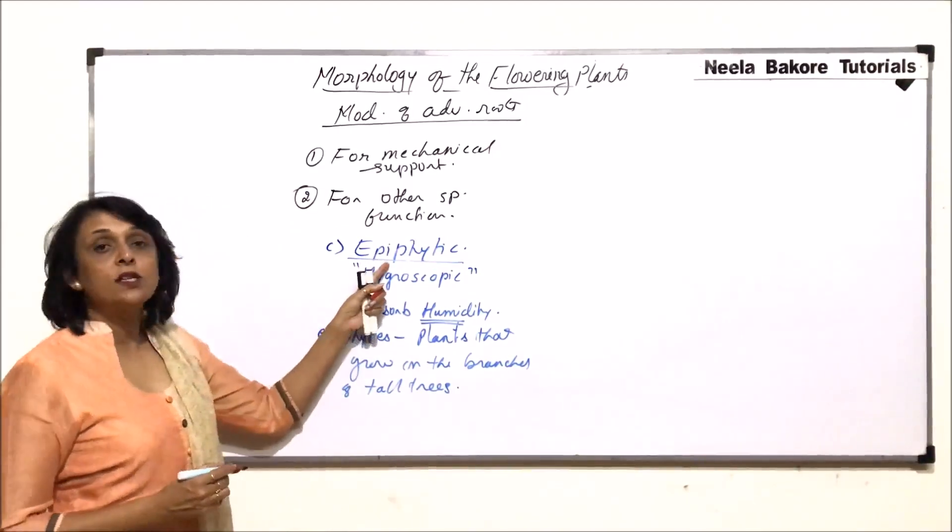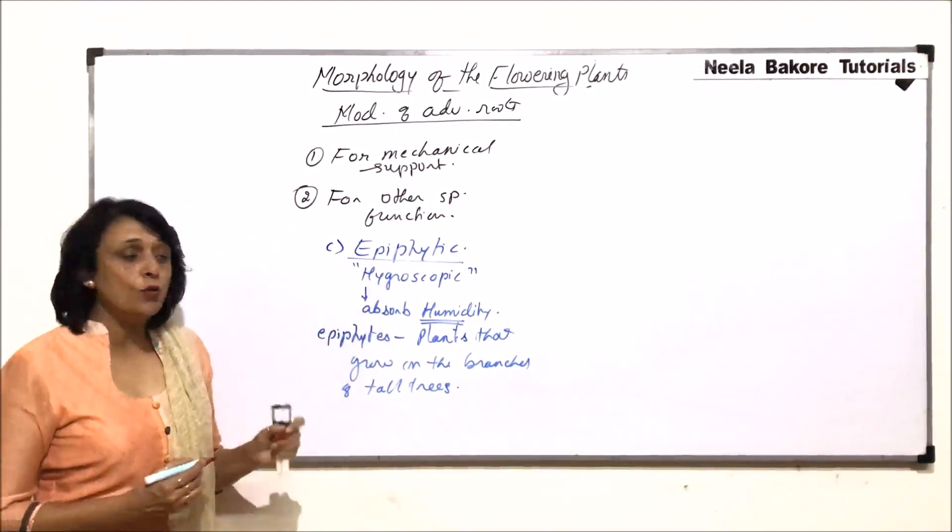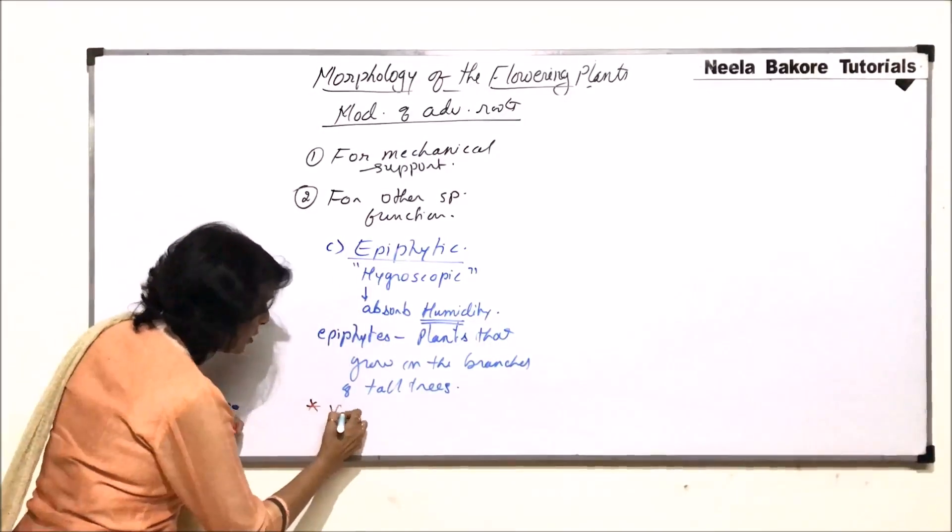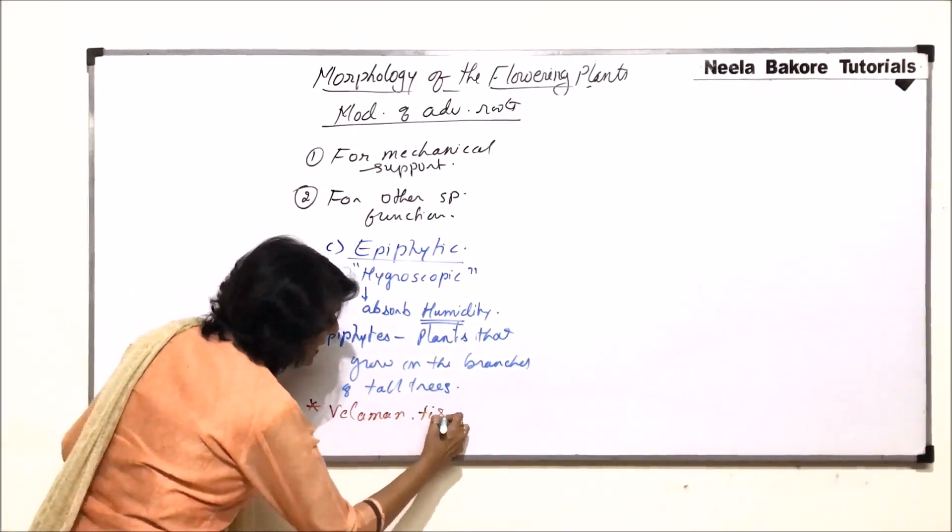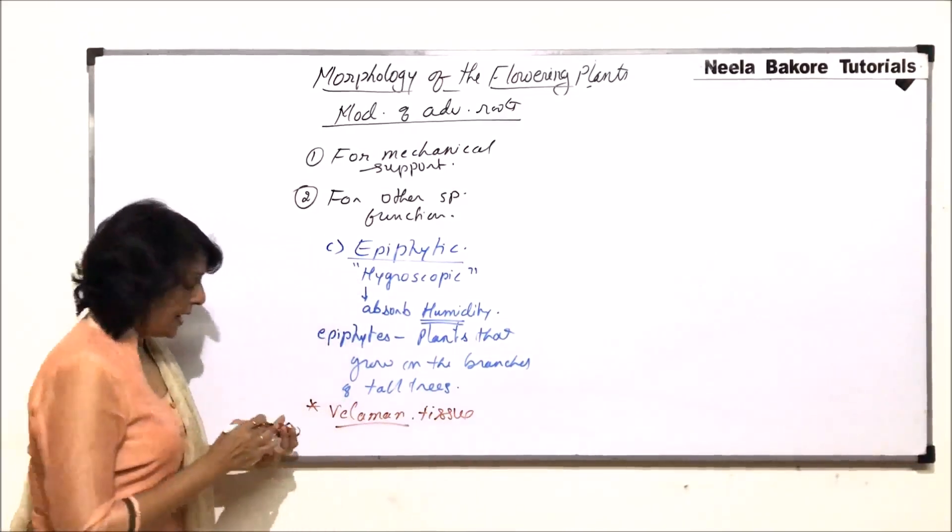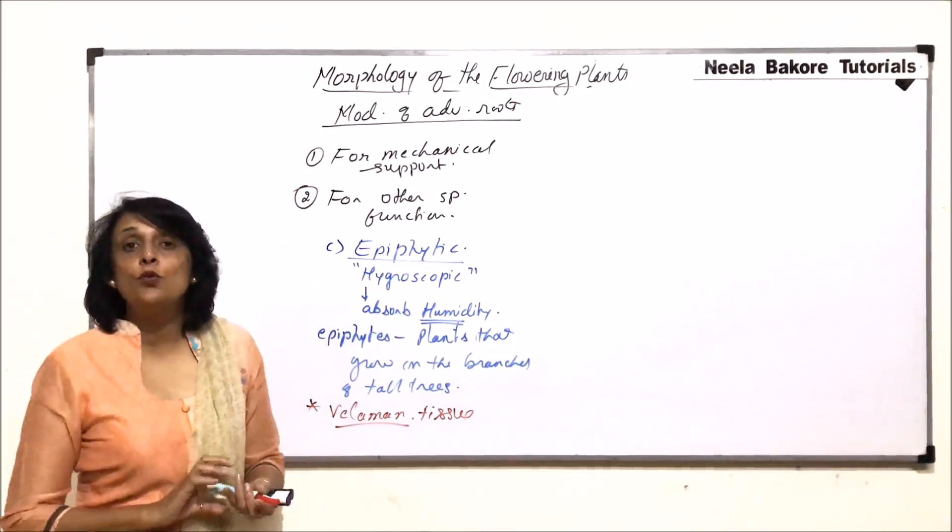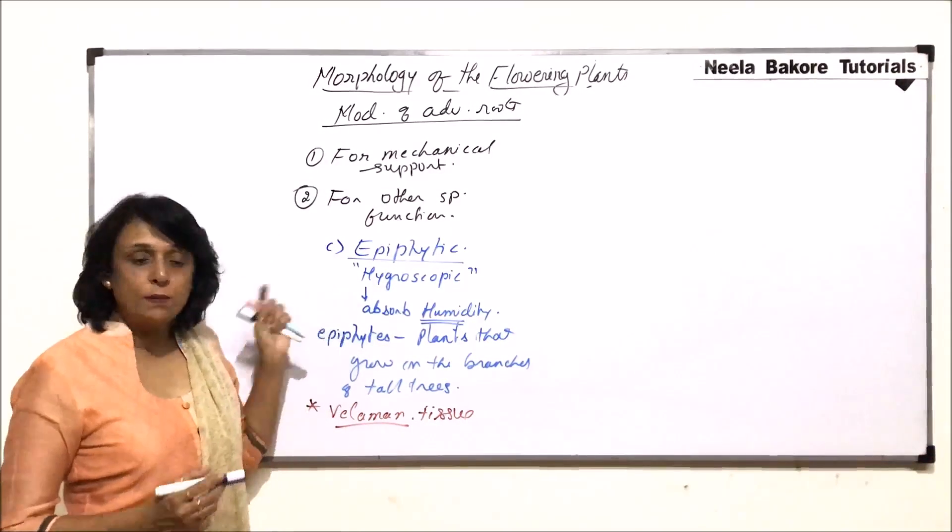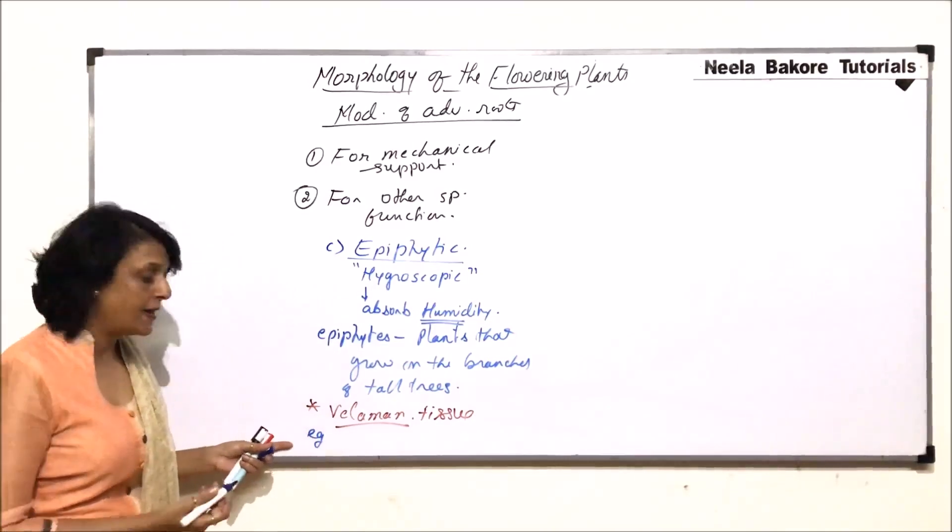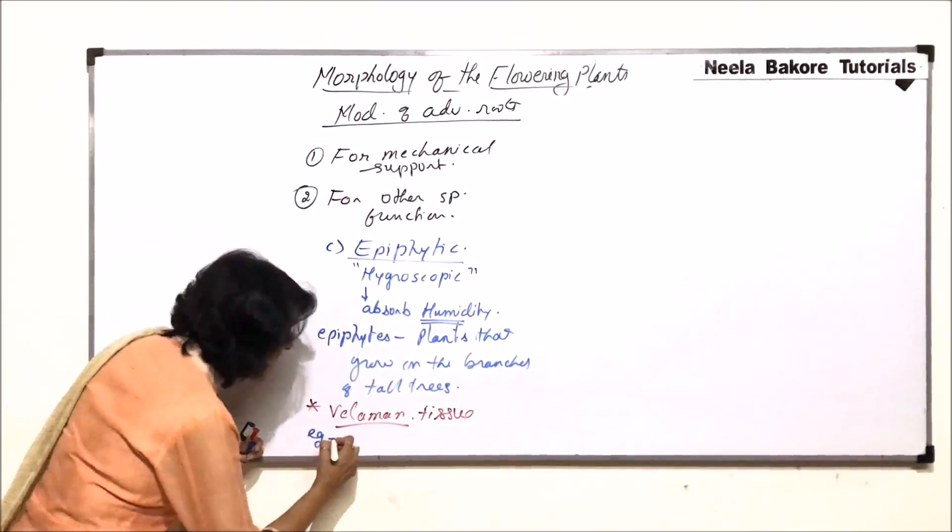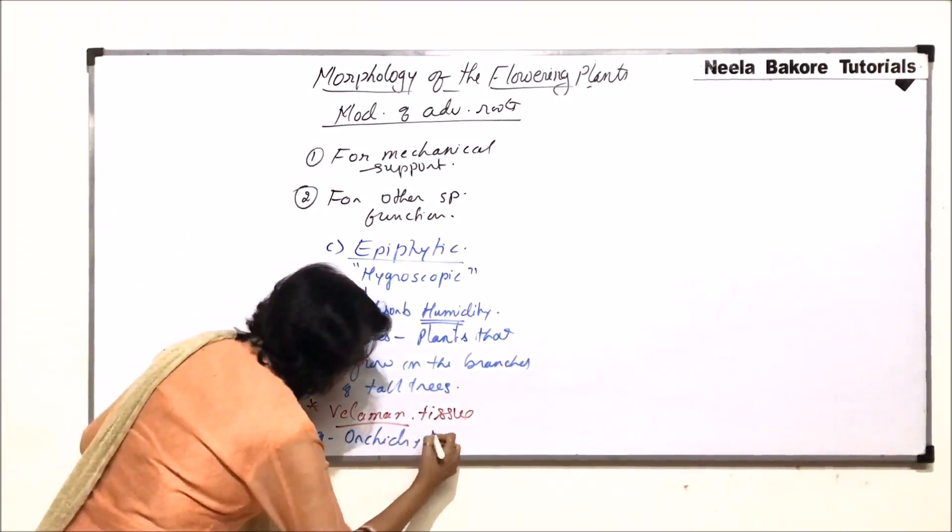For that, they have special type of roots and in their roots, there is a special tissue, which is known as vellumine tissue. Vellumine tissue is the one which helps the roots absorb this moisture. The example where we find these epiphytic roots are all the epiphytes like orchids, vanda.